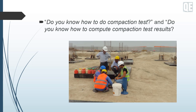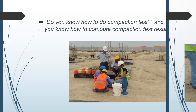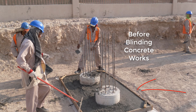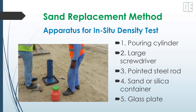There are many ways to determine the compaction of soil, but here I used the sand replacement method, which we are using on our site. Before blinding works, you have to make sure that the inspection request is submitted to the consultant and the compaction test report is passed. First, here are the apparatus and equipment for the in-situ density test.